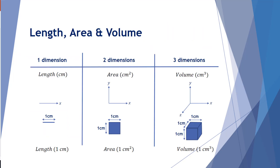First of all, let's consider measurements in one, two, and three dimensions. If we're measuring in one dimension, we traditionally look at things like length — one centimeter. If we're looking in two dimensions, we're looking at things involving area, with measurements that have height and length — one centimeter squared. So we've got centimeters for length and centimeters squared for area.